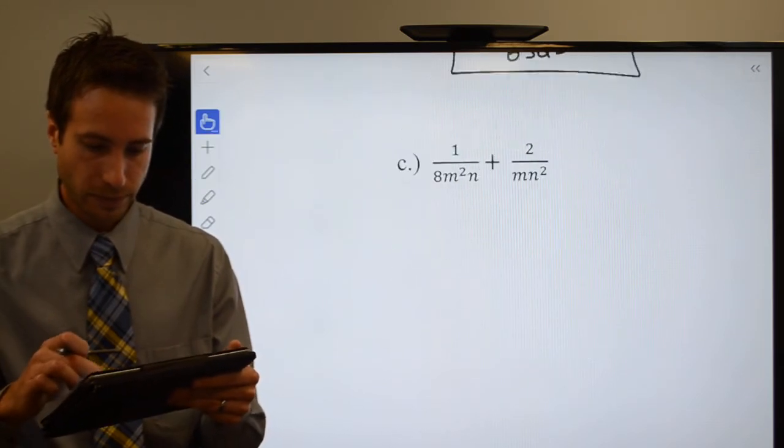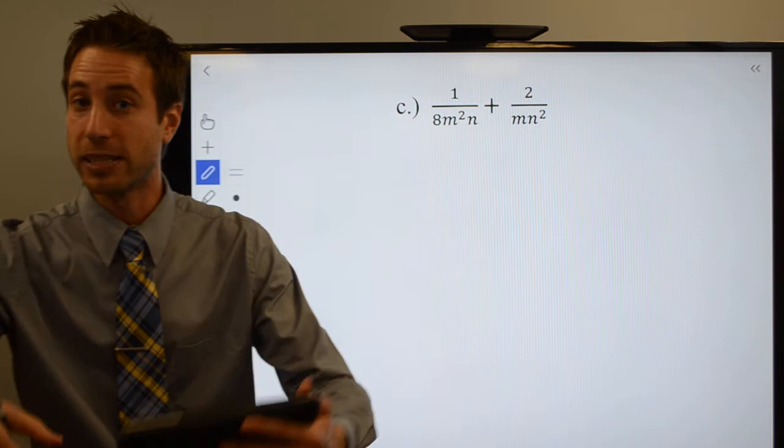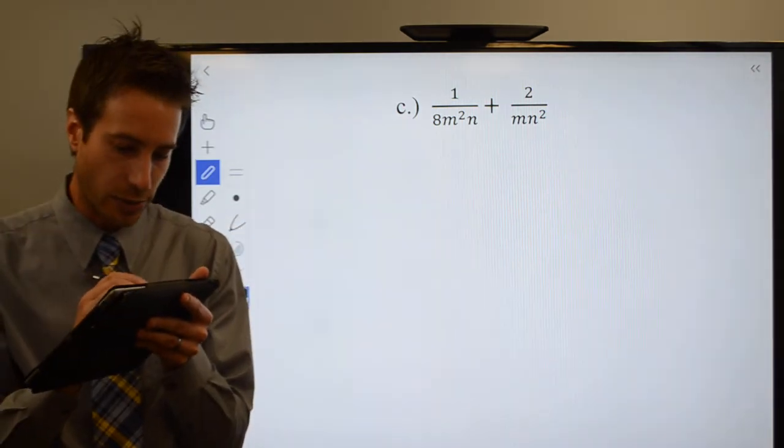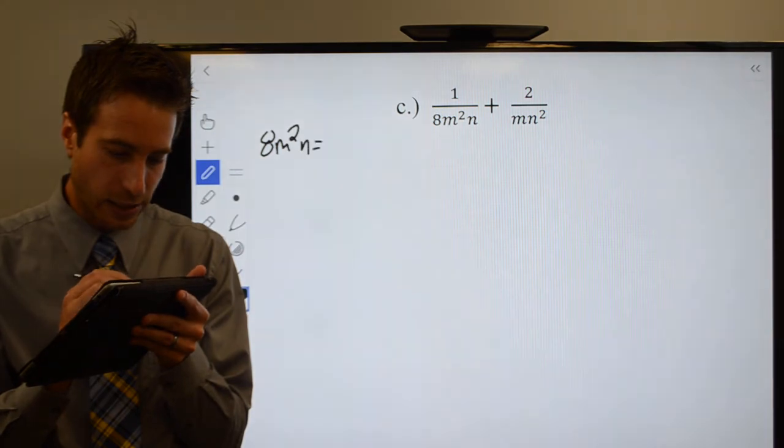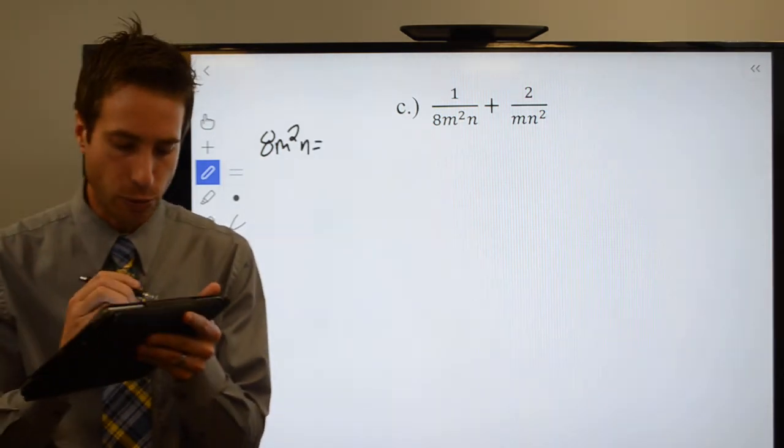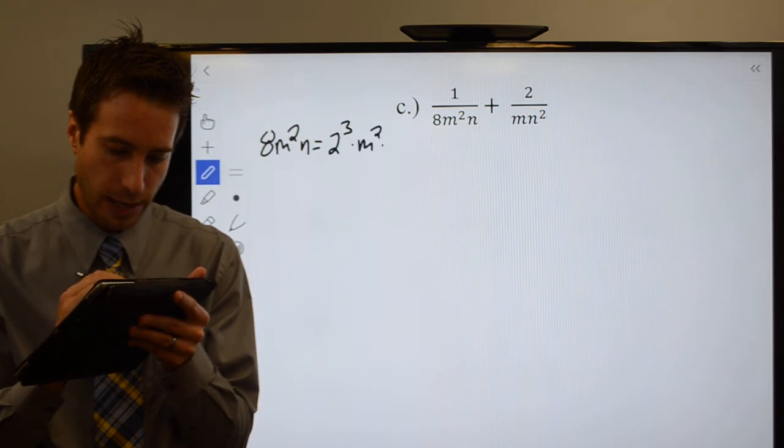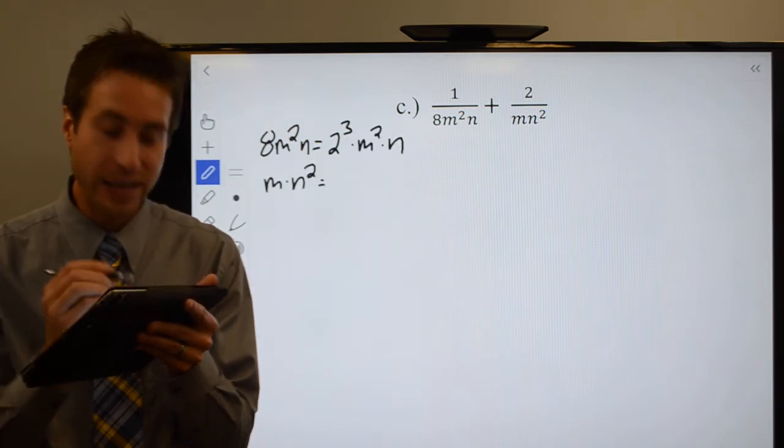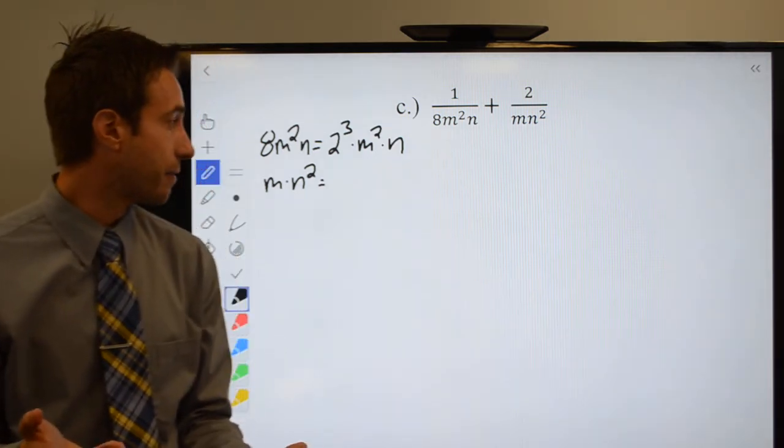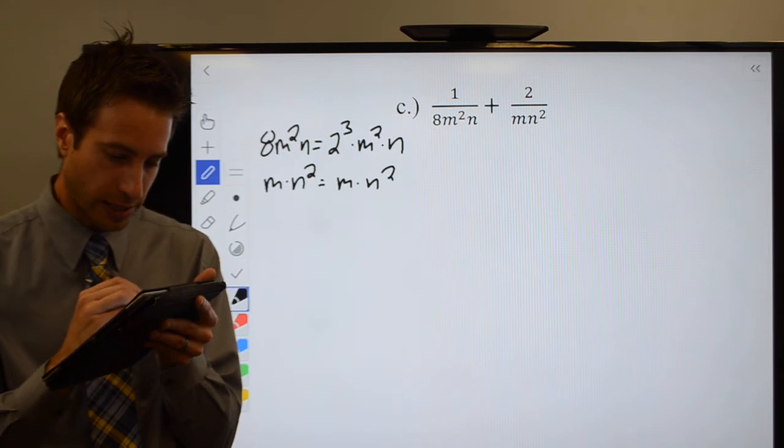I don't even have to check, I use the least common multiple. Let's do another one. Hey, let's add these guys. Alright, well my common denominator is going to be my LCM. So here we go. 8M squared N is going to be 2 cubed times M squared times N. And then I have an M times N squared. I don't even have a coefficient, so it's just going to be M times N squared. So this is easy.